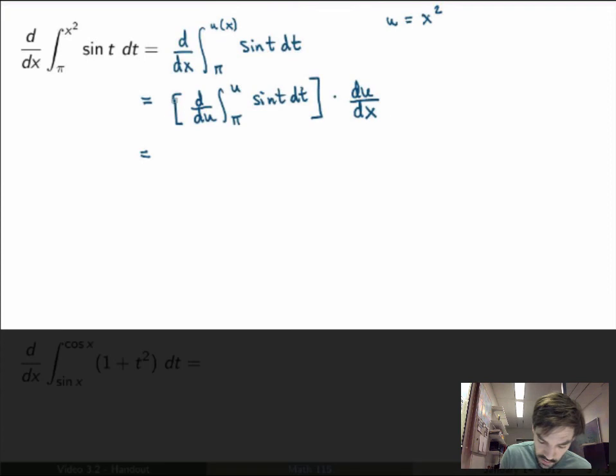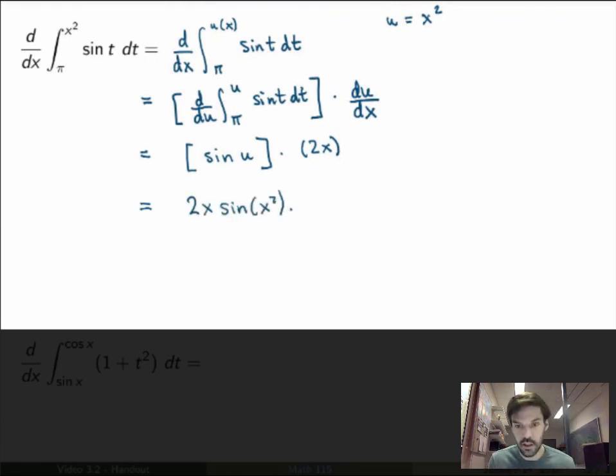Alright, and now I can use the FTC to evaluate the first part. Now this becomes, by FTC, just the function inside evaluated at u, sin(u). Now du/dx, remember, we called u equal to x squared, so du/dx will be 2x. And that's not quite the final answer, because I need to rewrite everything in terms of x. u is equal to x squared, so what I get is 2x sin(x squared) for the final answer.